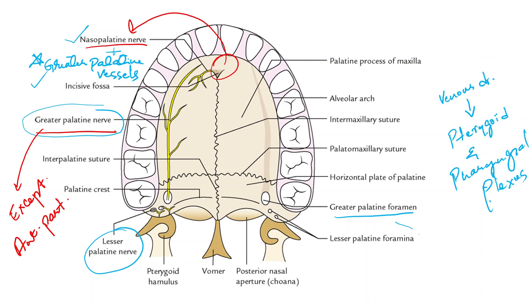The lymphatics from the palate drain mostly into the upper deep cervical lymph nodes, and a few reach the retropharyngeal group of lymph nodes. In this video we have learned about the formation, location, structure, foramina, arterial supply, venous drainage, nerve supply, and lymphatic drainage of the hard palate. Thank you.